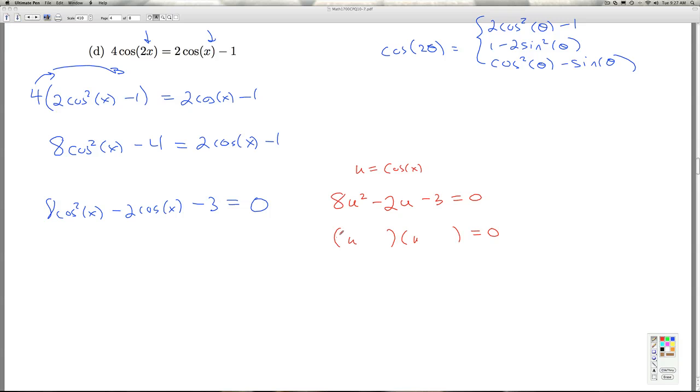So we can try a 2 and a 4. See if we can get that to work out. So if I'm using a 2 and a 4, I need factors of 3 that have a difference of 2. So I can try the minus 3 plus 1. So that gives me the minus 6u plus 4u. So that's exactly what we want. So that means over here, I can factor this as 2 cosine x plus 1 times 4 cosine x minus 3 equal to 0.